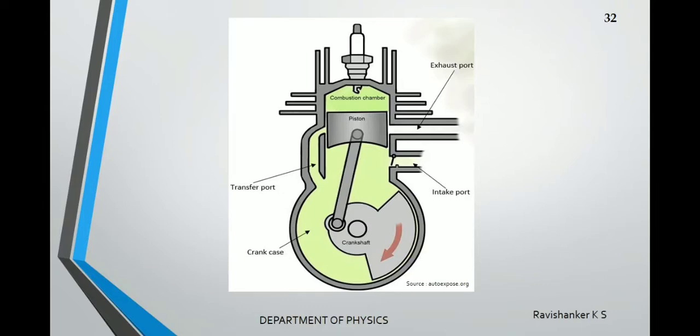That is all about the two-stroke engine. Two-stroke engines, compared to four-stroke engines, are easy to manufacture and are of lower cost, but they are less efficient than four-stroke engines. They also produce huge noise during working — you may have heard the sound from dirt bikes, which is due to the two-stroke engine. That is all about the classification of internal combustion engines based on number of strokes per cycle. Now we will move to the next classification — based on the type of working cycle — which will be discussed by Siddharth.